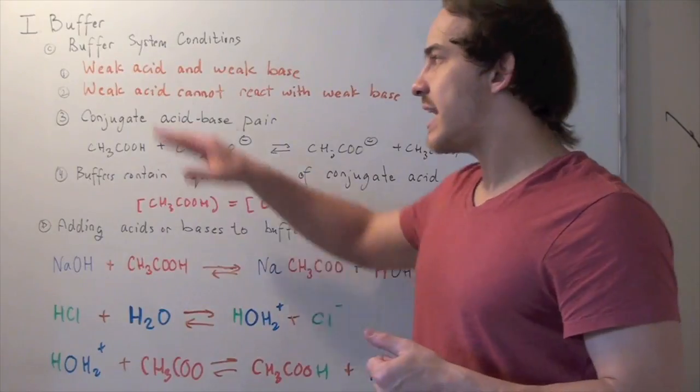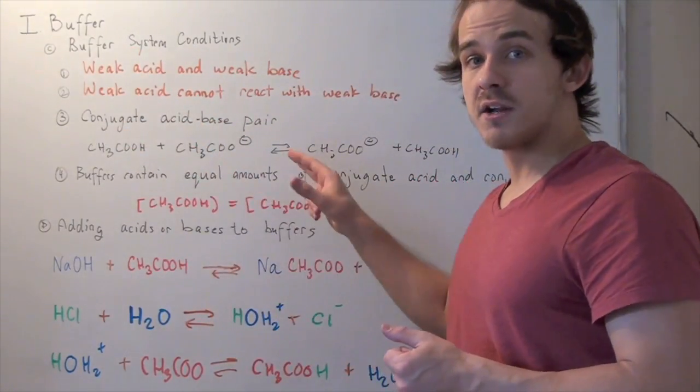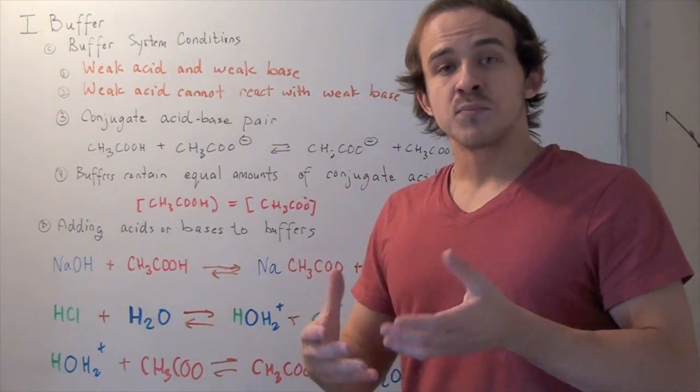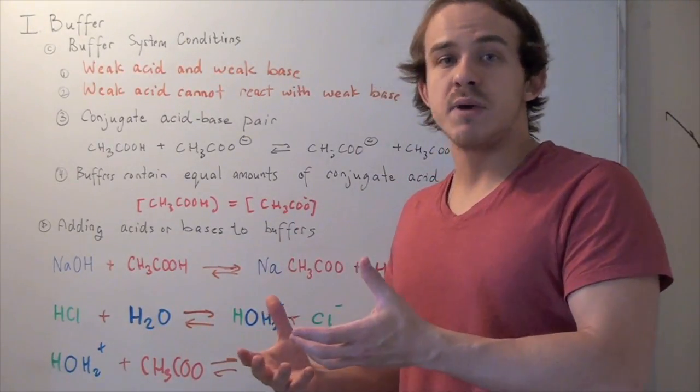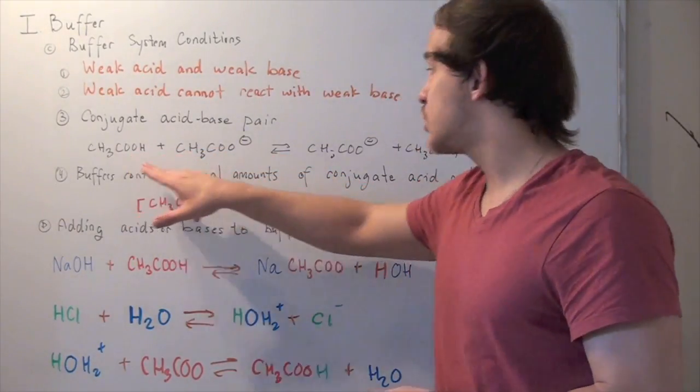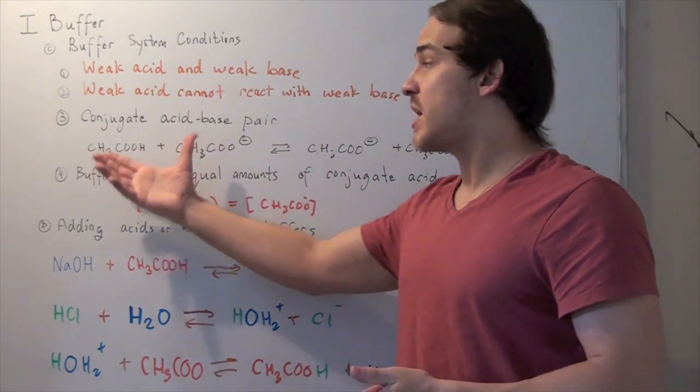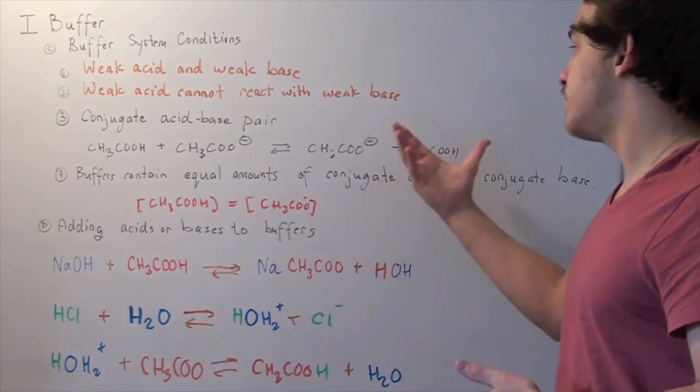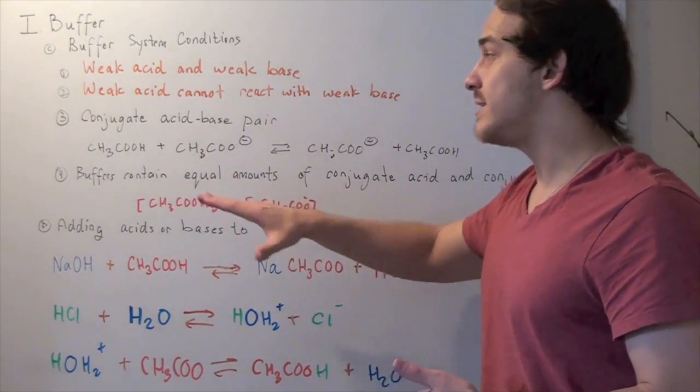What satisfies these two requirements? A conjugate acid-base pair. Whenever a conjugate acid reacts with a conjugate base, it produces another conjugate acid-base pair. For example, acetate ion and acetic acid react to produce acetate ion and acetic acid. So nothing is neutralized and our buffer remains unchanged.